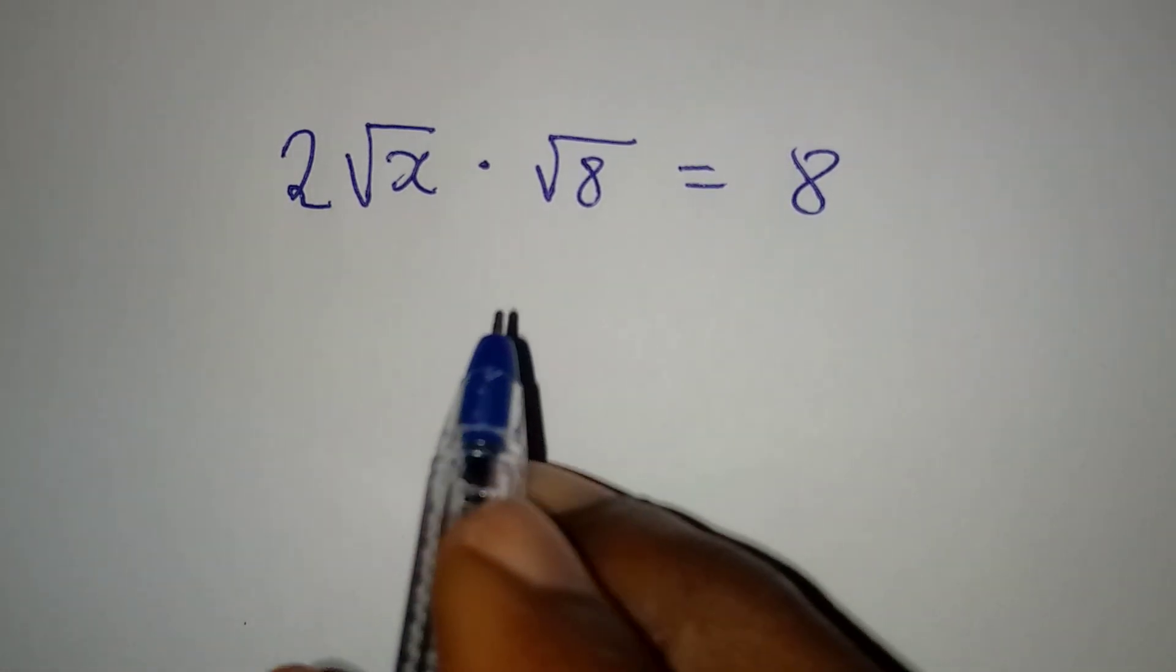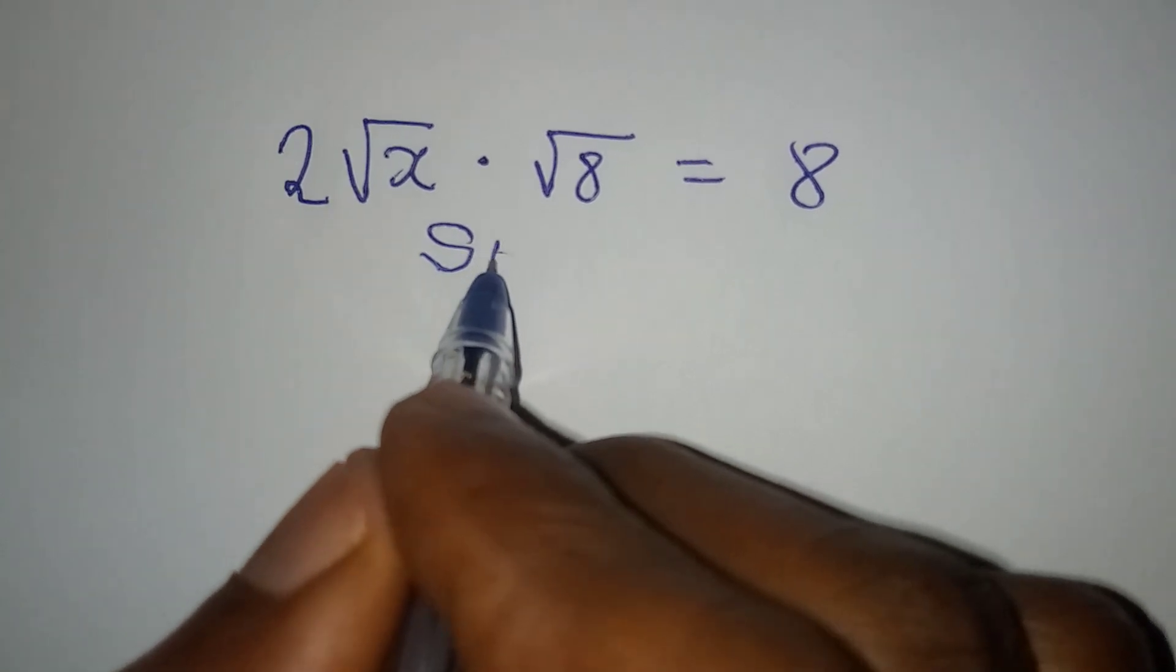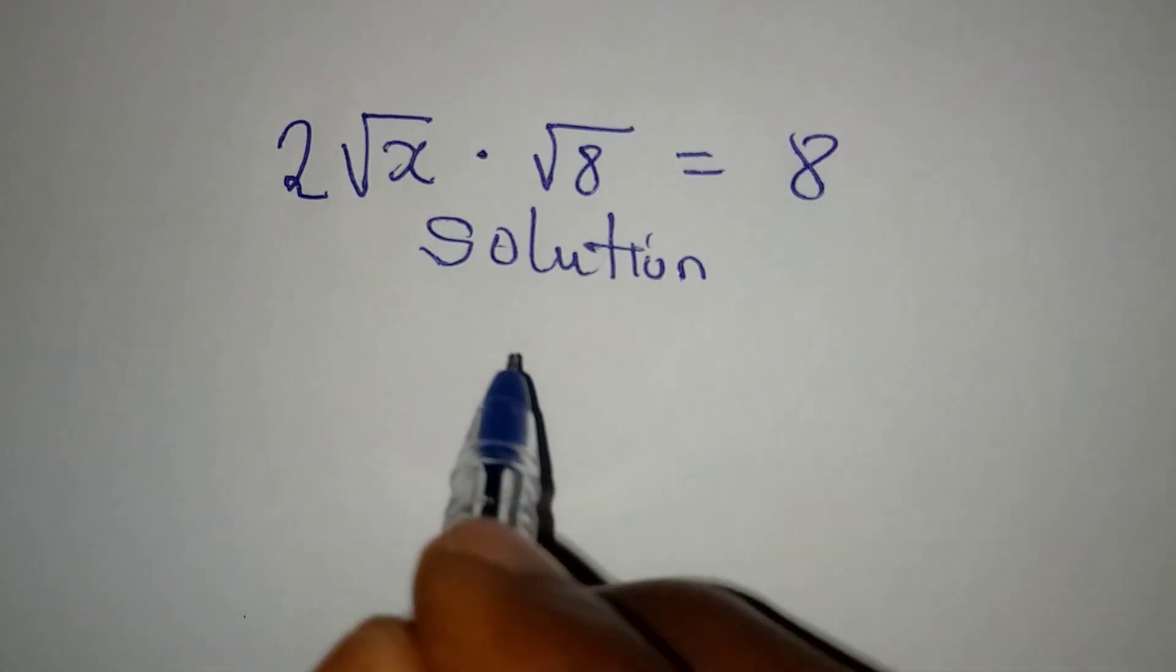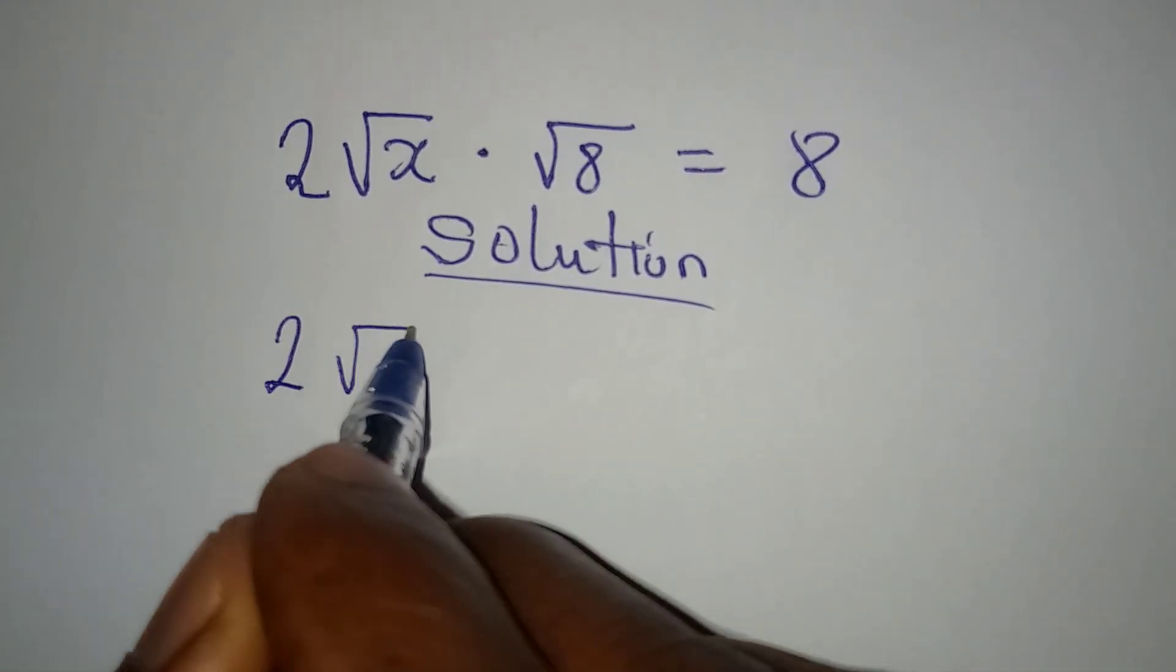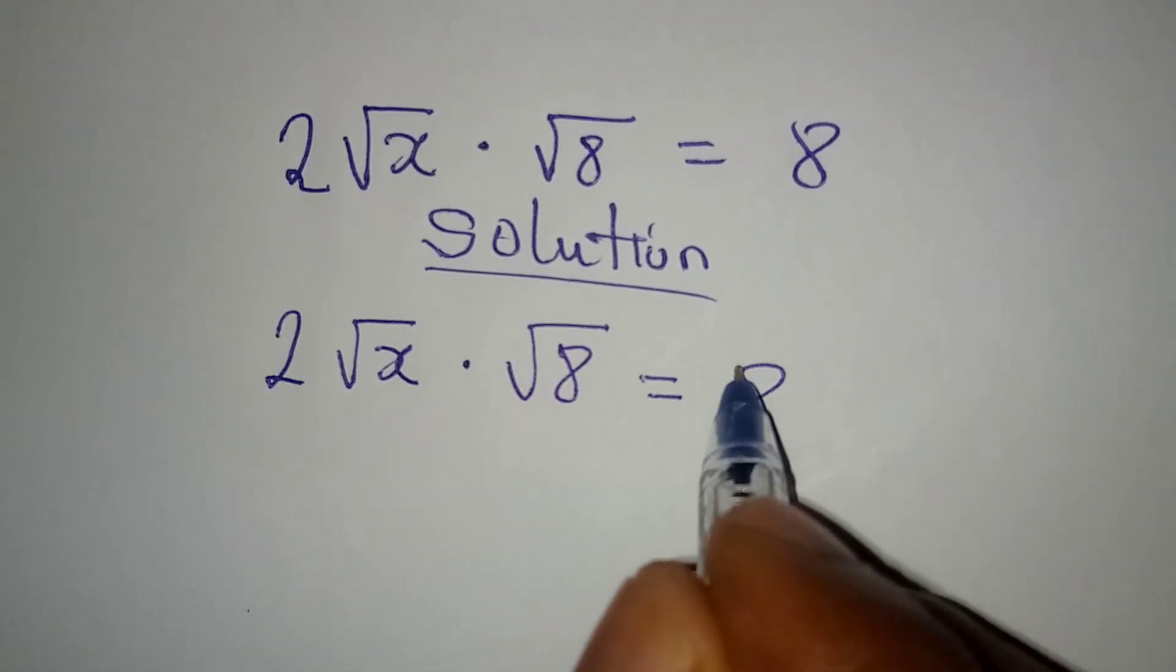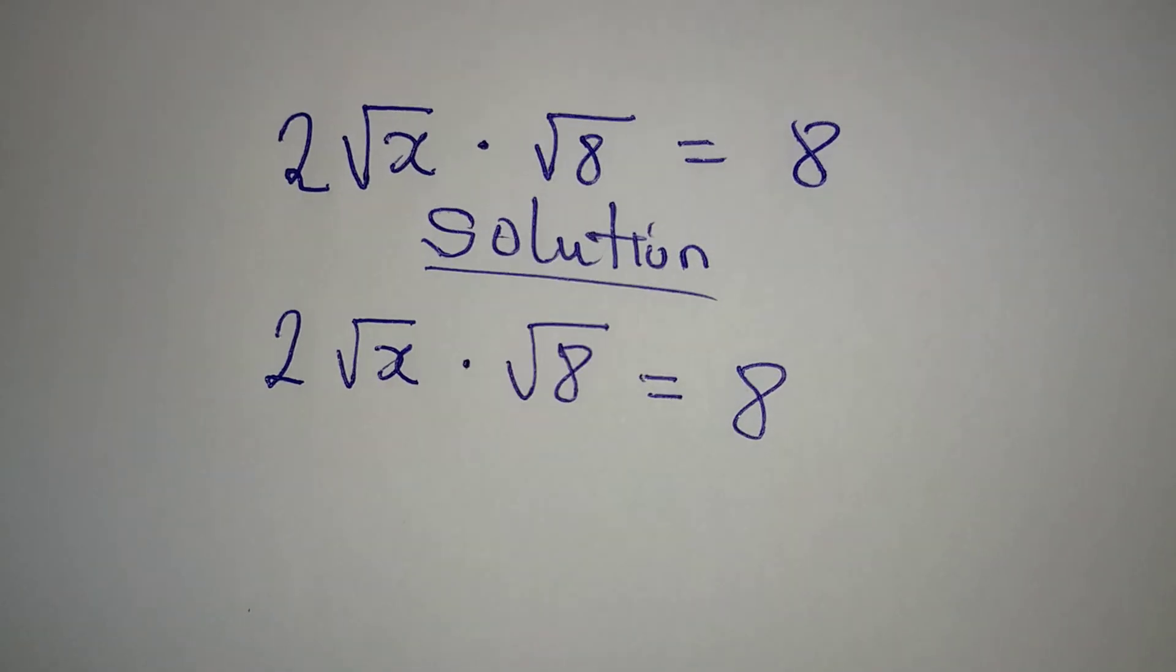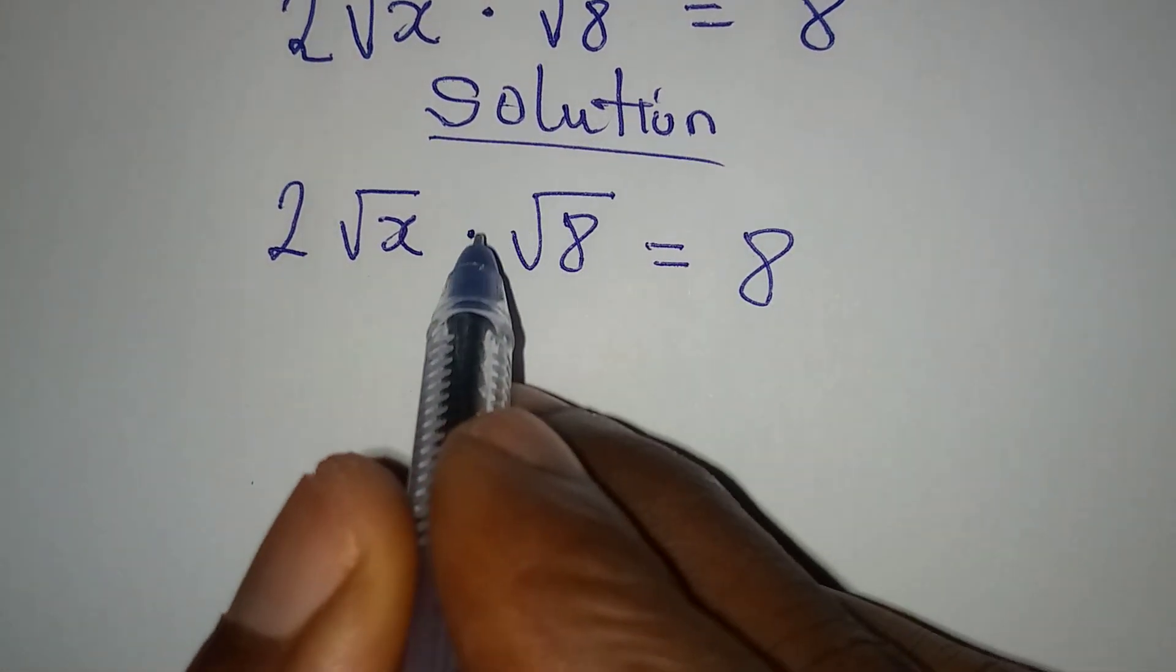Hello everyone, let's work on this problem. We have 2√x multiplied by √8 equal to 8. We are looking for the value of x.